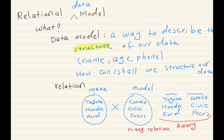Even though a relation is defined over sets, we sometimes misuse the term. We also refer to a single set as a relation. So putting these concepts together: the relational model is about using relations to describe the structure of our data. A data model is a way to describe the structure of data, and a relation is a subset defined over the Cartesian product. We are using relations to describe the structure of our data.